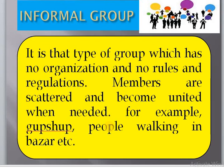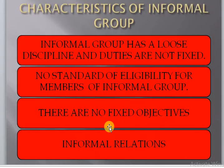The next one is the informal group. It is that type of group which has no organization and no rules and regulations. Members are scattered and become united when needed — for example, a gap shop, people walking in the bazaar, etc. It is up to the member of the society whether they want to join or not; it is their option. Characteristics of an informal group: it has loose discipline, duties are not fixed, there is no standard of eligibility for membership, and there are no fixed objectives. Members have informal relations among themselves.